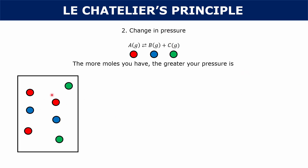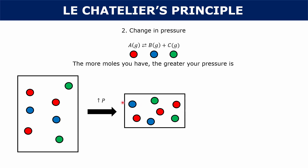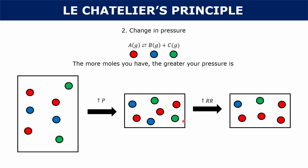Let's say this system is at equilibrium — three reactant molecules and two each of your product molecules. I add a stress: I increase the pressure by decreasing the volume, making the container smaller. The system asks itself: how do I decrease the pressure? The way you decrease the pressure is by having fewer moles in your system. Increasing the reverse reaction would decrease the pressure — if you took two product molecules and turned them back into a reactant molecule, you'd end up with fewer particles and that would work to decrease the pressure.